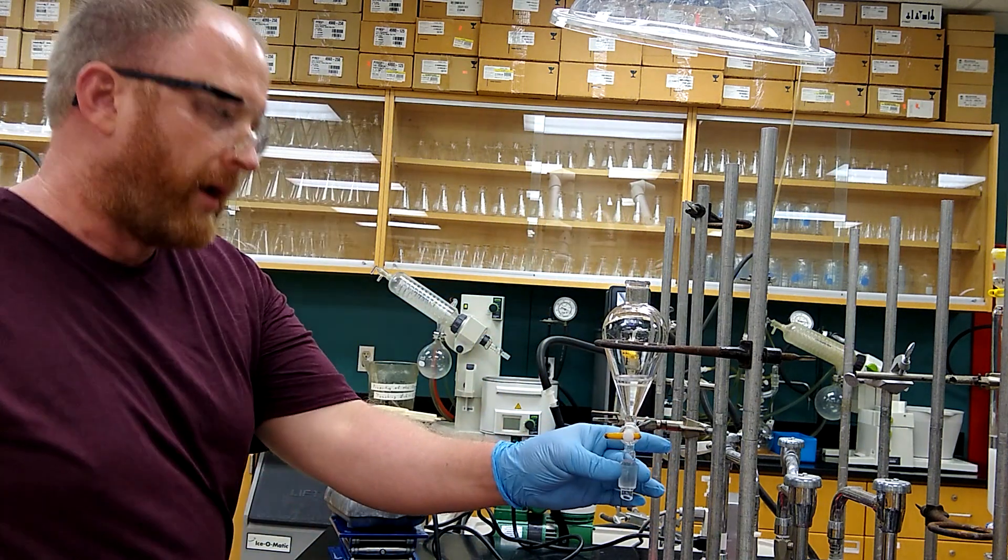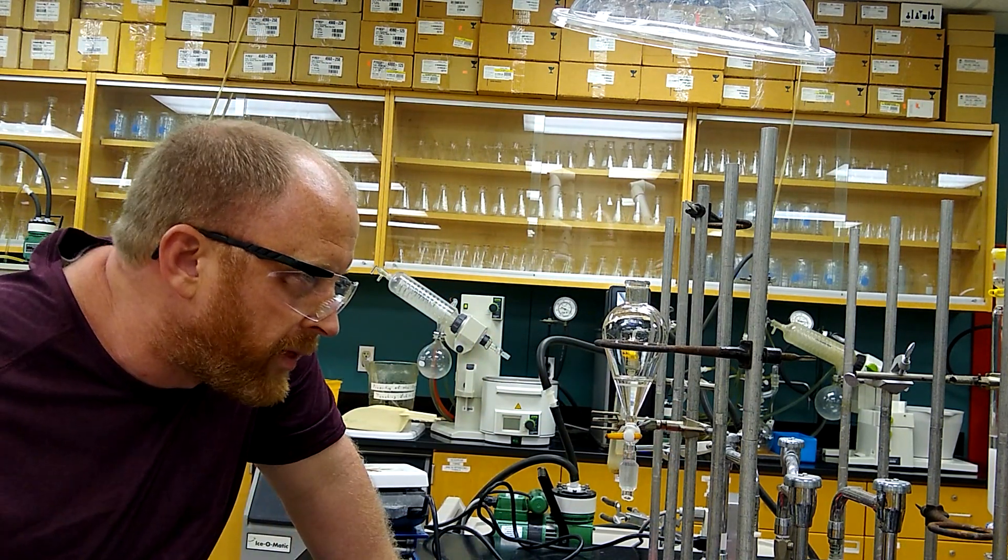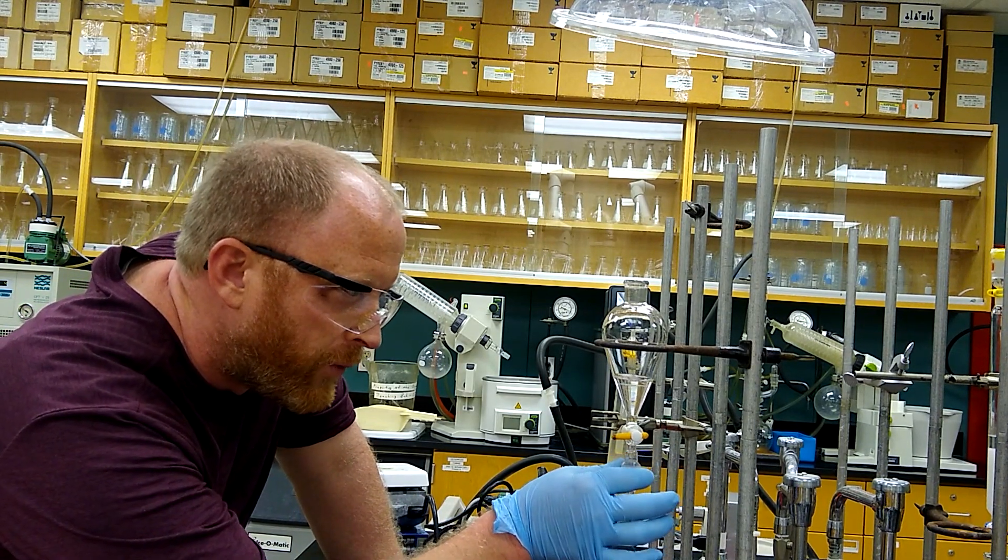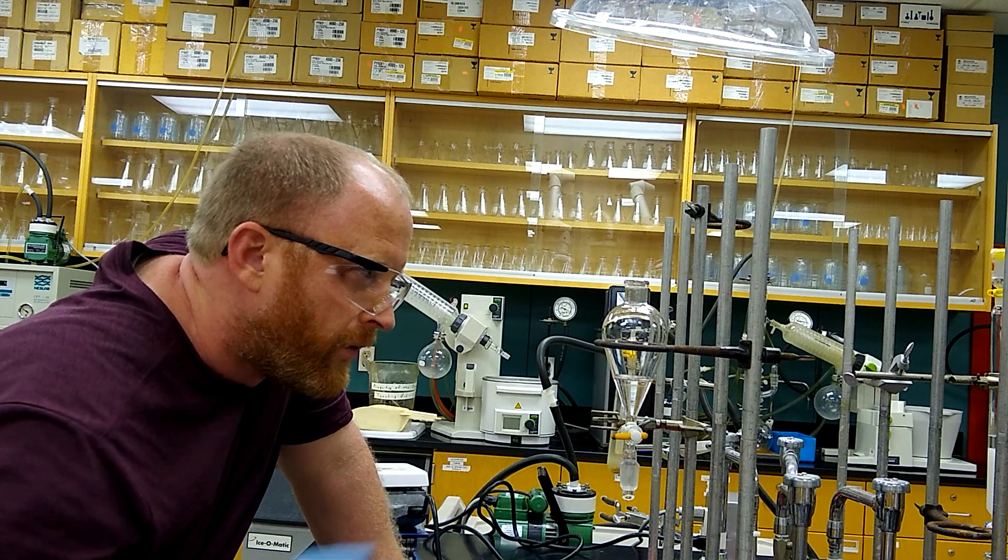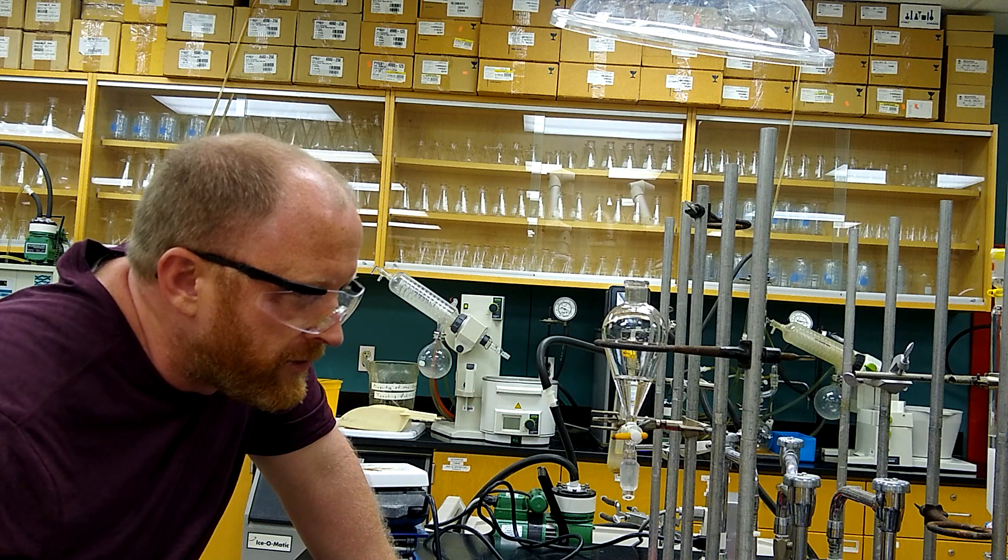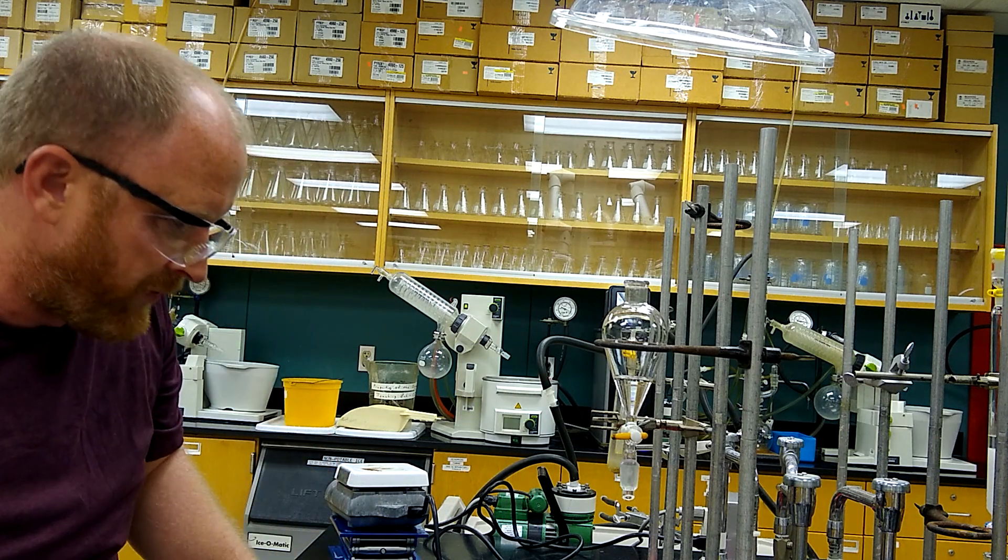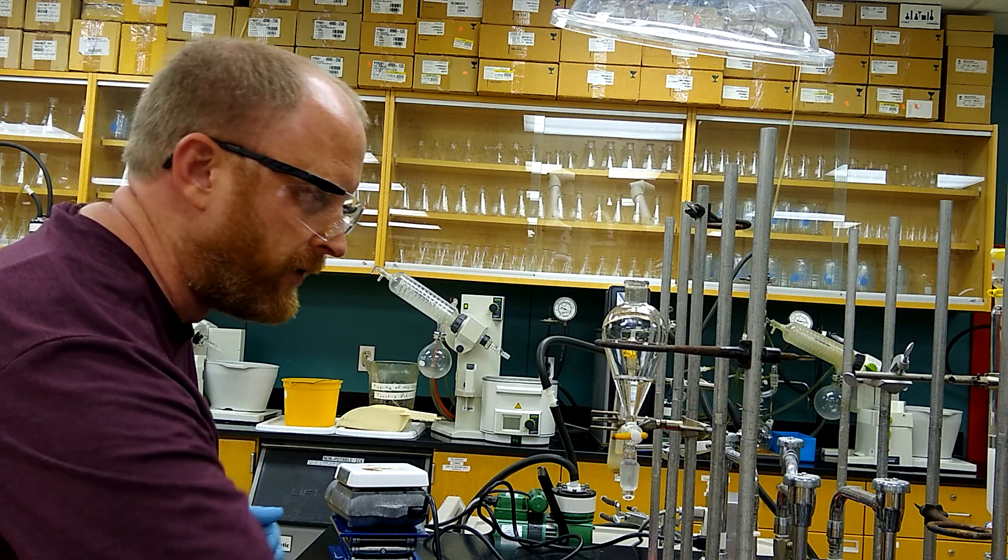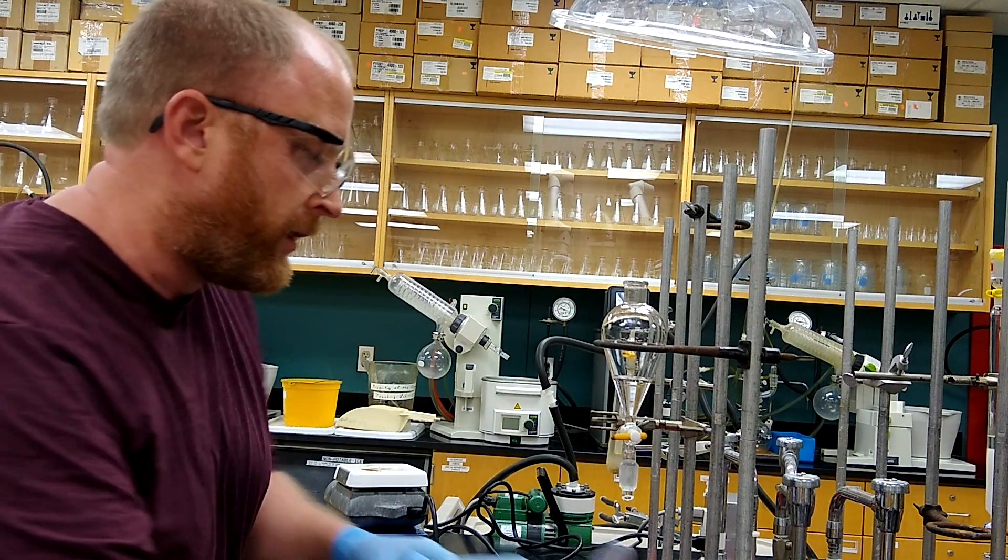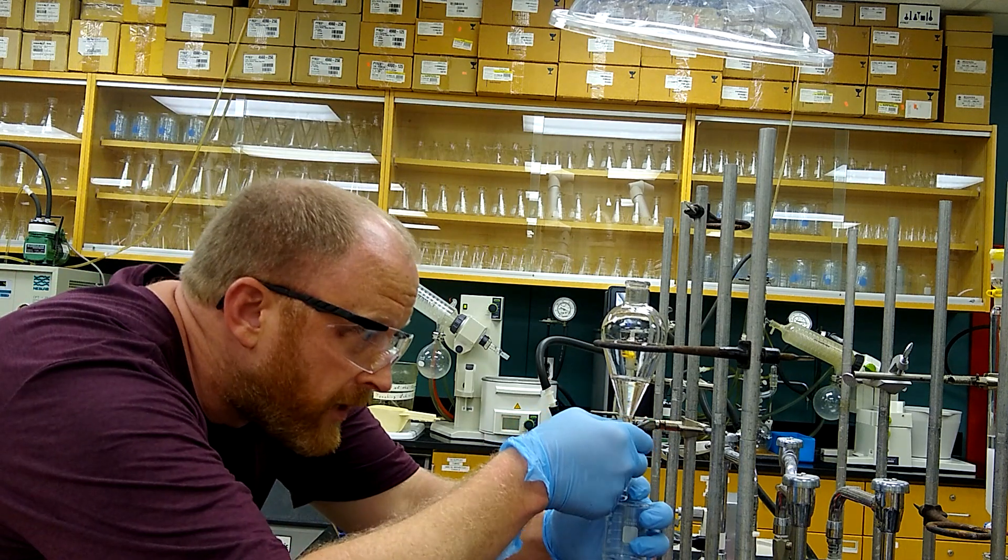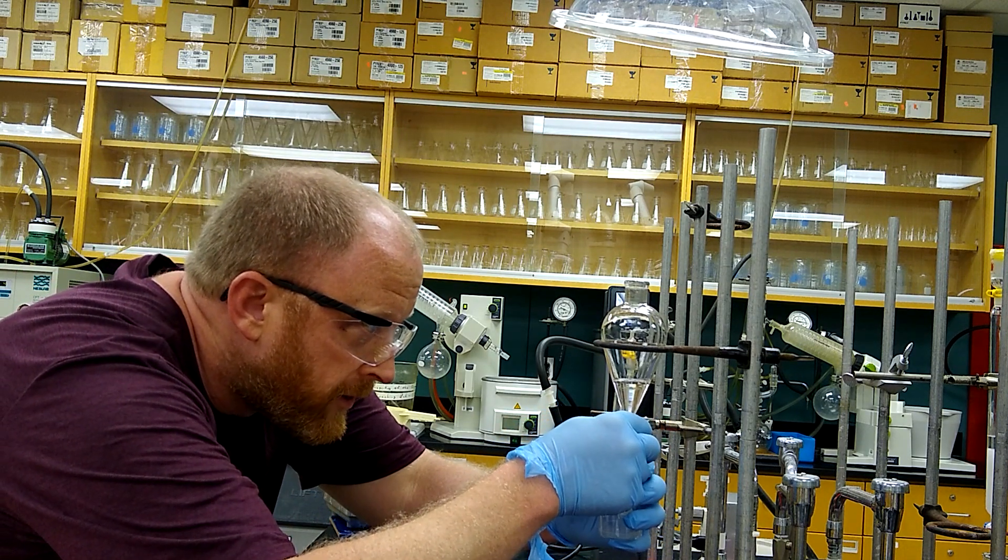If you'll remember, because the density of ether is less than the density of water, which is 1 gram per milliliter, the ether layer will be on top. I just gave that a second to separate, and then we'll drain that off into another flask. Right now I'm just draining the aqueous layer off into a beaker.